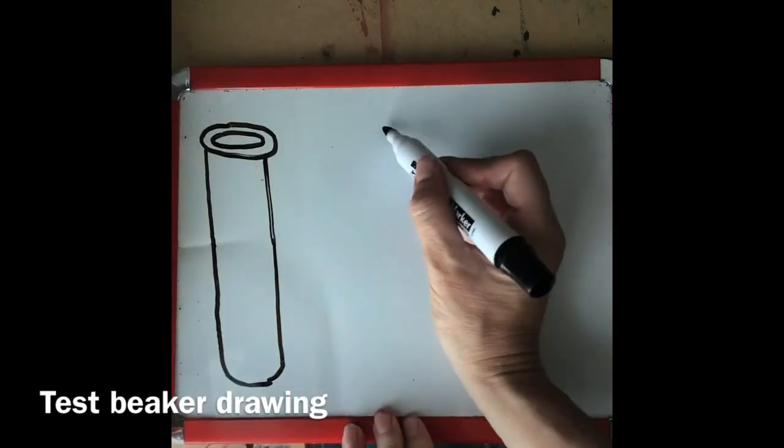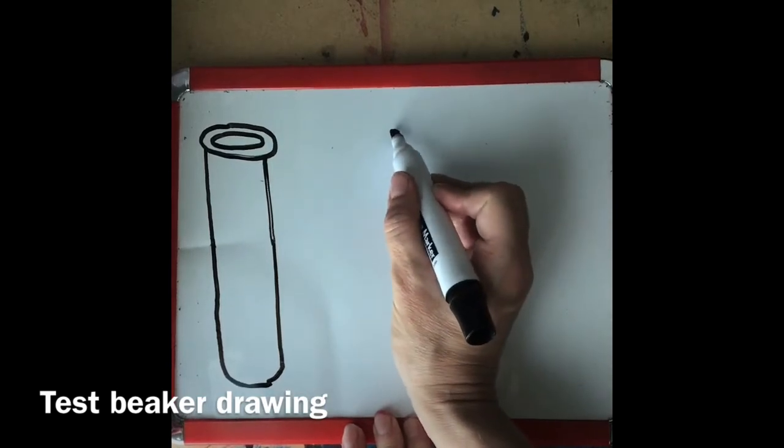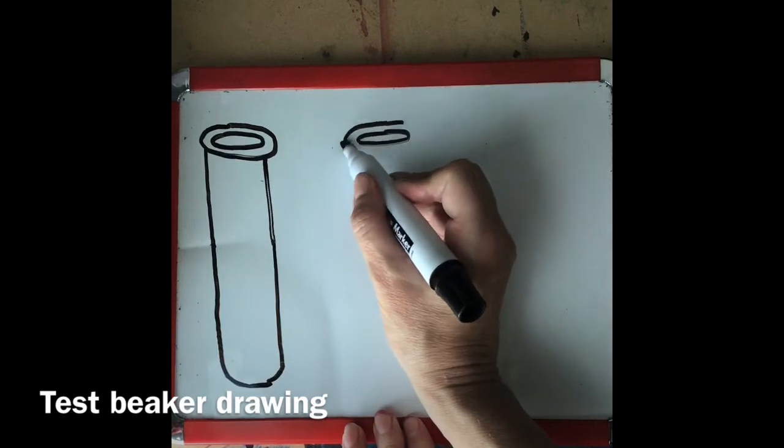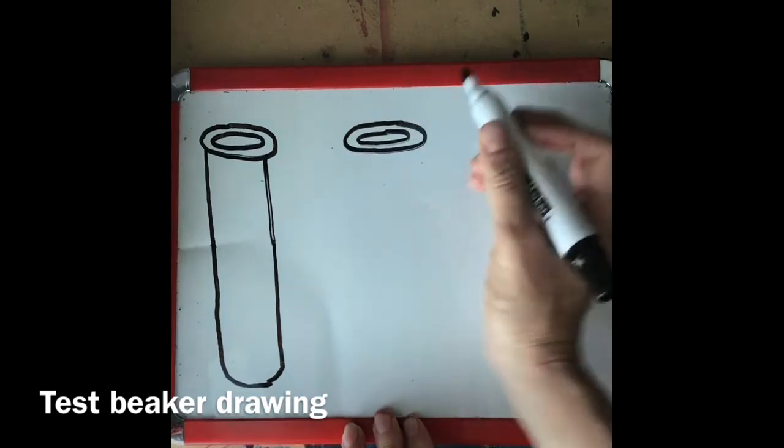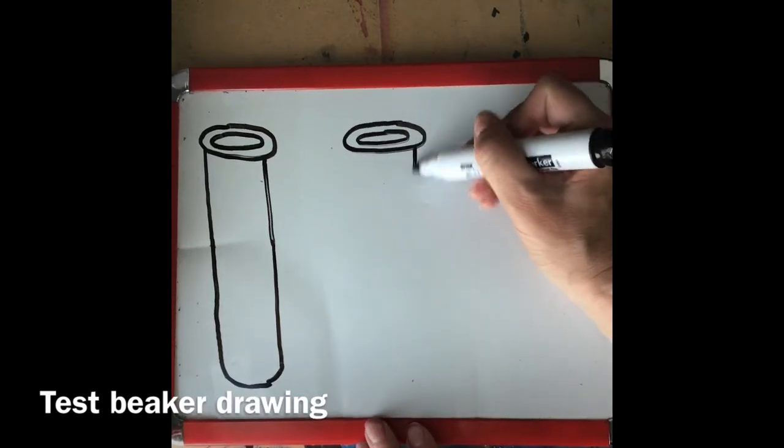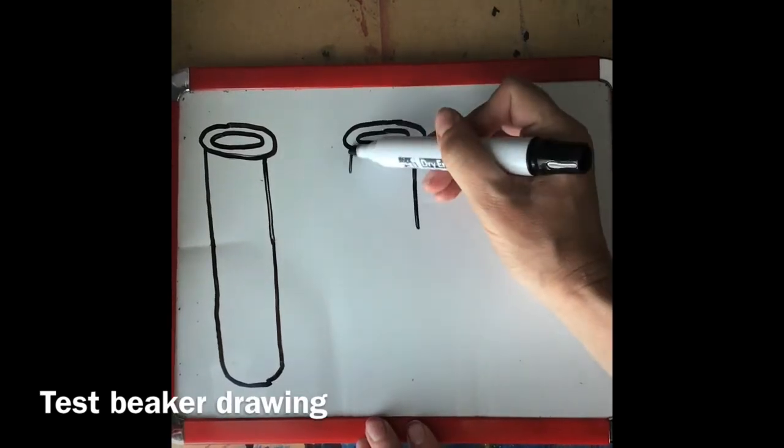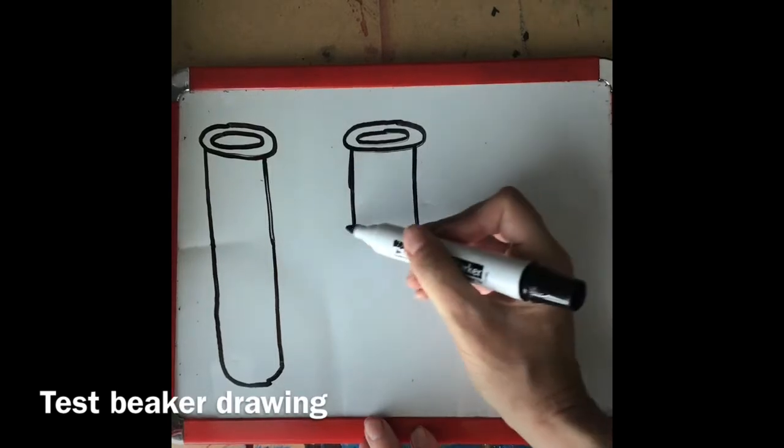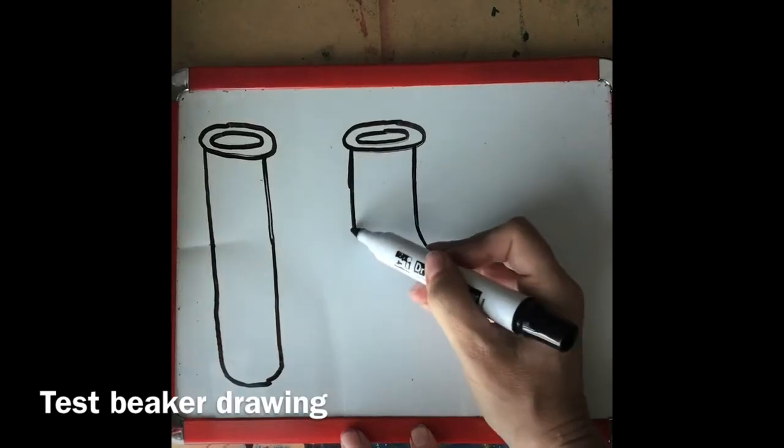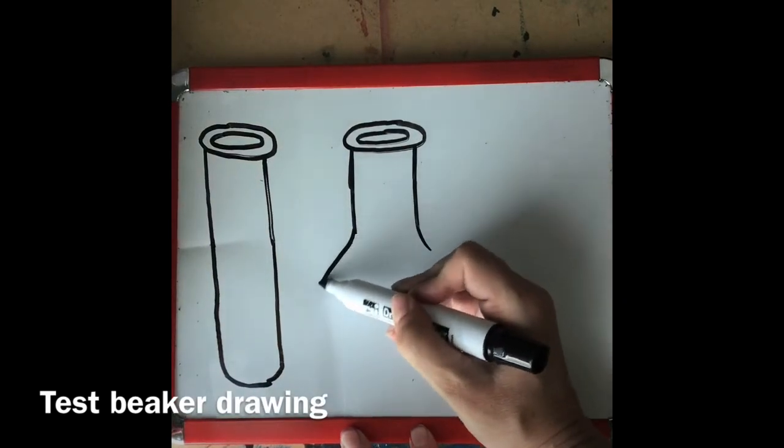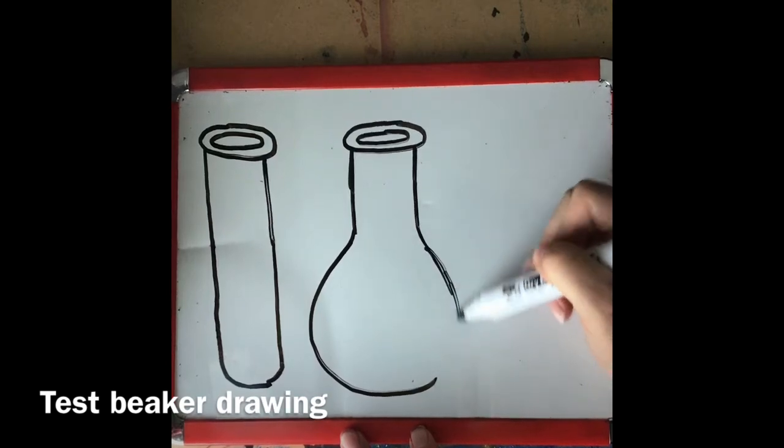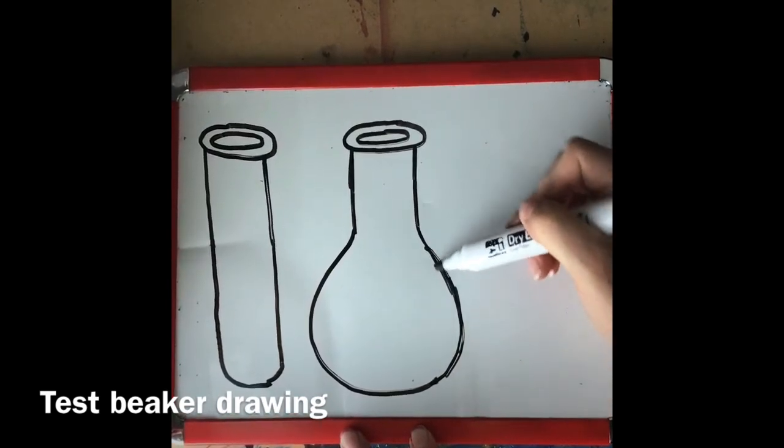For my second one I'm going to do the same thing to start. I'm going to start with two ellipses, two lines about three to four finger widths in length on either side. Now this time I'm going to create a sphere shape at the bottom. So I'm going to very slightly curve each side and then turn it into more of a circle at the bottom. Like so.